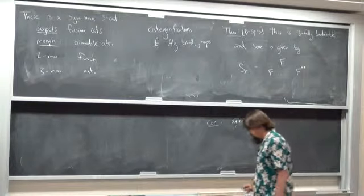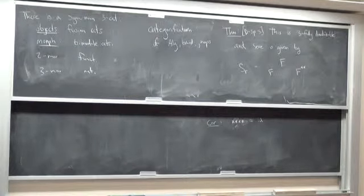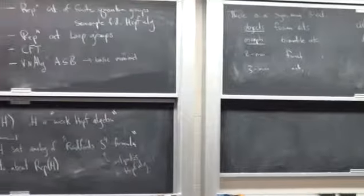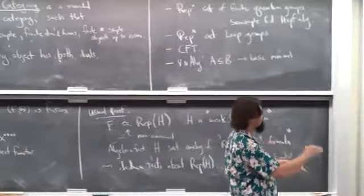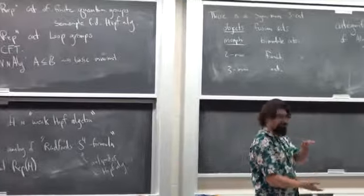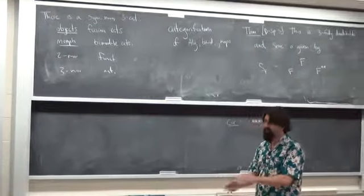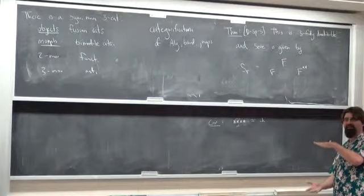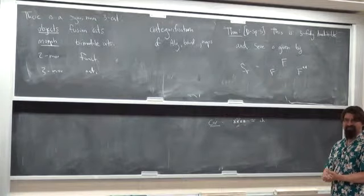This is part of a general story: whenever you have three layers of category and dualizability, you should expect this kind of behavior. None of this would be possible unless you were willing to work with three-categories, because even if you're working with two-categories, pi1 of SO2 is Z; it only becomes Z mod 2 once you pass to three-categories. I think that's a good place to end these lectures.